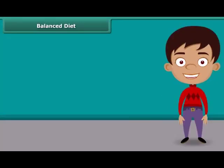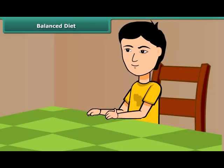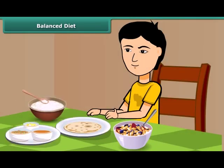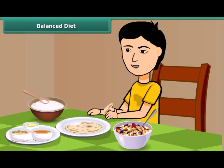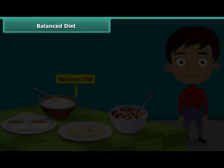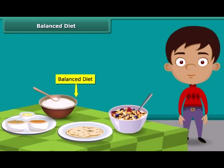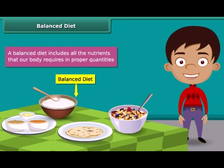As we know that all kinds of foods do not contain all the components. Our meals should have a balance of the different nutrients that our body needs for growing and maintaining good health. Such a diet is called a balanced diet. A balanced diet includes all the nutrients that our body requires in proper quantities. So we should accept the fact that having a balanced diet is the best way to live a healthy life.